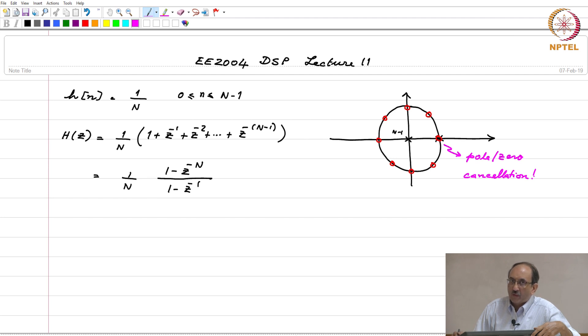If you have a factor of the form k by 1 minus a z inverse, the inverse transform depending upon the ROC will either be of the form a to the n u of n or minus a to the n u of minus n minus 1. In either case, it is an exponential that lasts forever. It is a one-sided exponential that is of infinite duration.